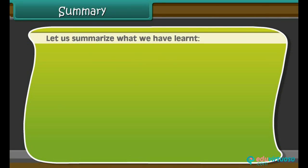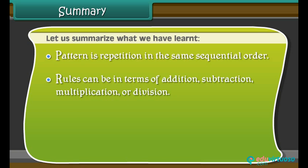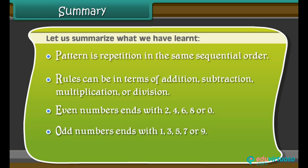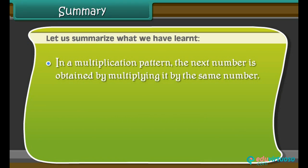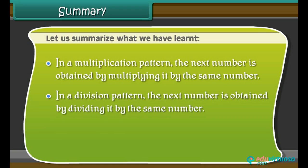Let us summarize what we have learned. Pattern is a repetition in the same sequential order. Rules can be in terms of addition, subtraction, multiplication, or division. Even numbers end with 0, 2, 4, 6, or 8. Odd numbers end with 1, 3, 5, 7, or 9. In a multiplication pattern, the next number is obtained by multiplying it by the same number. In a division pattern, the next number is obtained by dividing it by the same number.